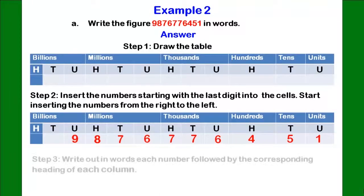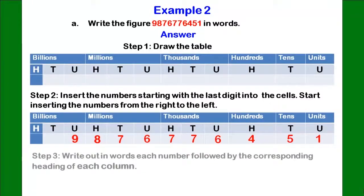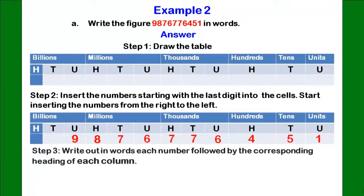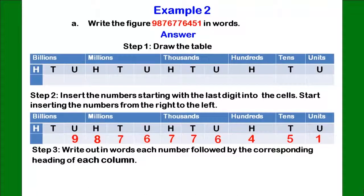Step 3: write out in words each number followed by the corresponding parent's name or heading on each column. Note: when writing in words, always end your statement with a parent's name or heading. Let us write out our example. 9 is the last digit and it falls under billion. So when writing out, you should write it out with the heading — that is, 9 billion.